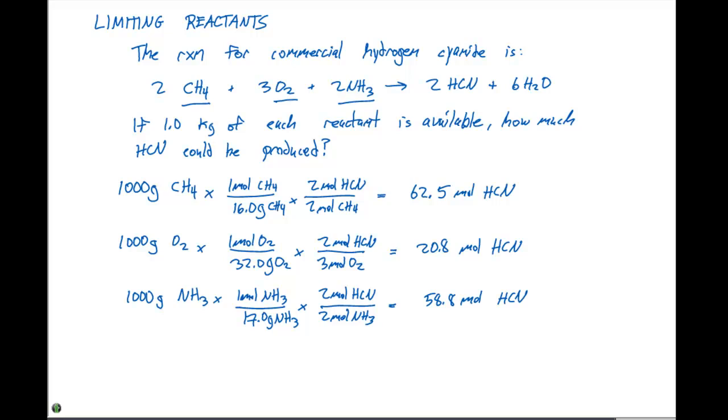So, now we can look at these and see the amount that was produced if 1,000 grams of each of our reactants reacted completely. So, the smallest number of moles produced is going to be produced by consuming all of the O2, or the oxygen gas, because 20.8 moles of HCN is the smallest amount here listed. So, the species that's going to determine how much HCN is produced is going to be the oxygen. Therefore O2 is the limiting reactant, because that's going to dictate how much HCN can be produced.